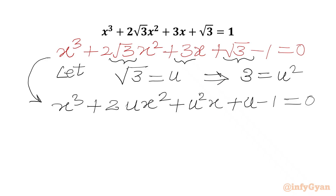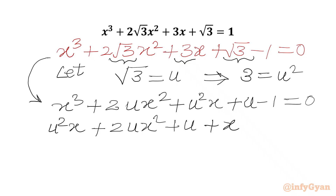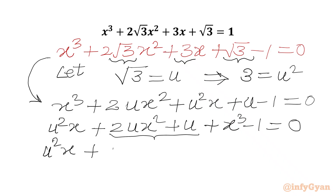Now we will create one quadratic equation in u. Writing all the terms respectively: u²·x + 2u·x² + u + (x³ − 1). We can factor out u, giving us u·(u·x + 2x² + 1) plus the remaining term. So we write: u·x·(u) + u·(2x² + 1) + (x³ − 1) = 0.